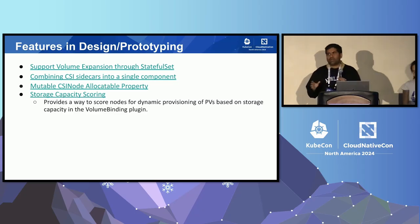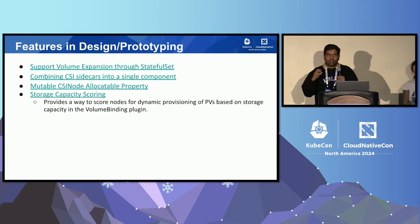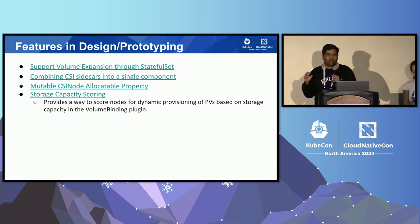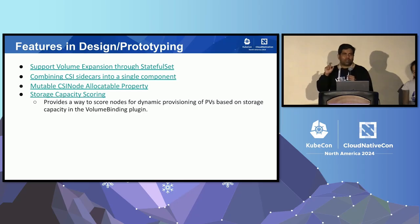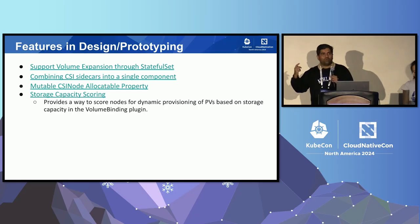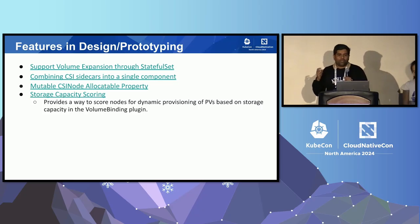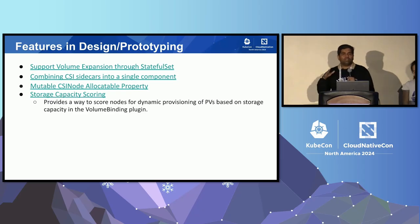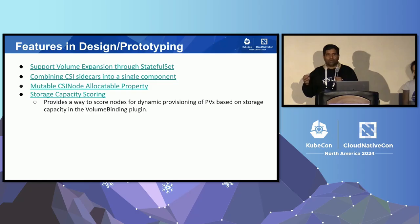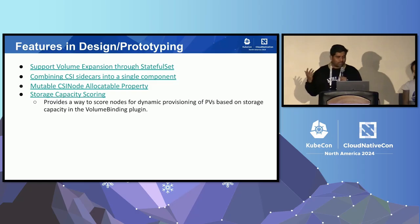We also have a proposed design in 1.32 for making the CSI node allocatable property mutable. On AWS, GCE, and other cloud providers, there's a limit on how many volumes you can attach to a node. The CSI node allocatable property has a count that tells the scheduler how many volumes can be attached, and the scheduler uses this to decide whether to schedule a pod on that node. But on many cloud providers, this value can change based on ENIs or GPUs attached to the node. Making it mutable will allow the scheduler to dynamically adjust the limit, so fewer pods will be stuck in a container-creating state.